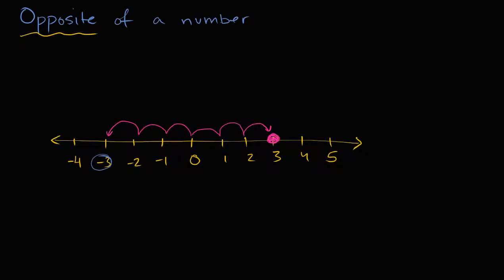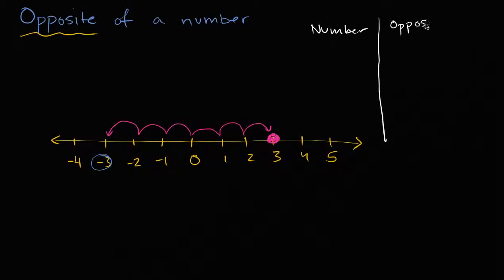Let me make a little table here. So if we have the number, and then we have its opposite. We just figured out that if you have the number three, its opposite is going to be negative three.